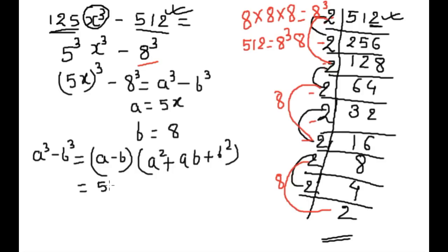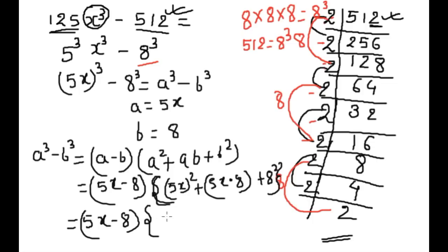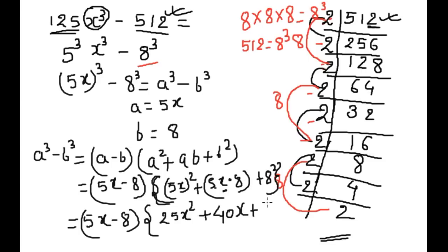Here a is 5x and b is 8. So a square is 5x square, plus a into b which is 5x into 8, plus b square which is 8 square. Now we can write: 5x minus 8, times 25x square plus 40x plus 64. This is the complete solution of binomial factorization.